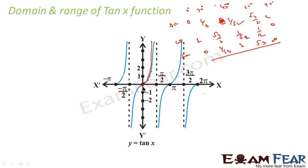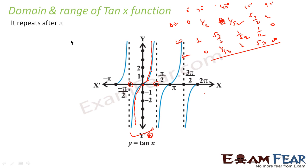Similarly on the negative side, you get the same graph shape. Here you observe that tan repeats after π — from 0 to π is one full period. In the case of sine and cosine it was repeating after 2π, but for tan it repeats after π. Also, the range of tan is −∞ to +∞. So the minimum is −∞ and the maximum is +∞.